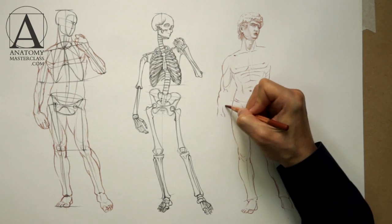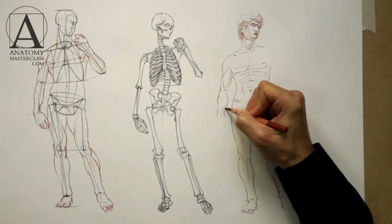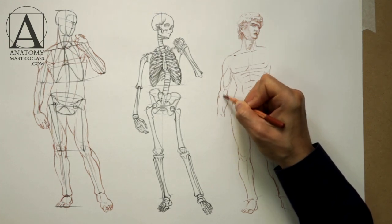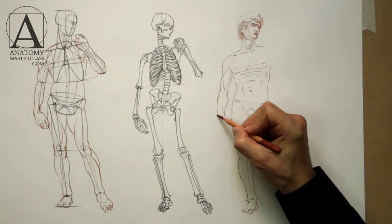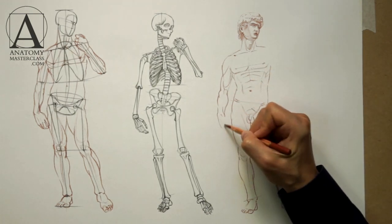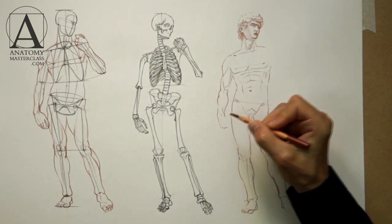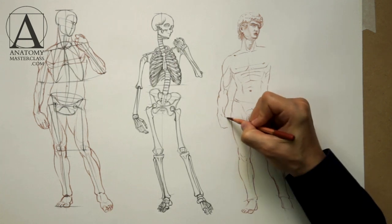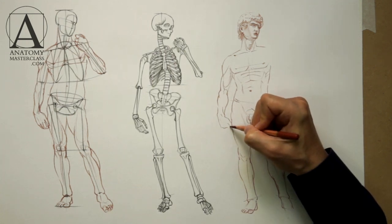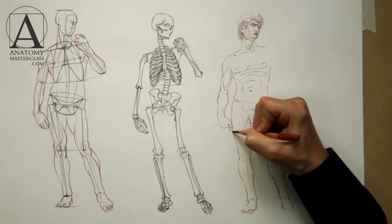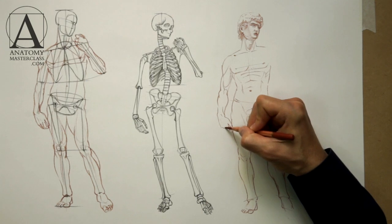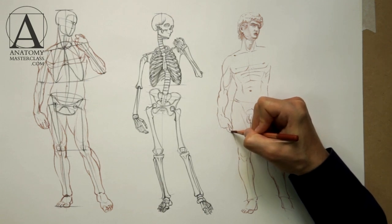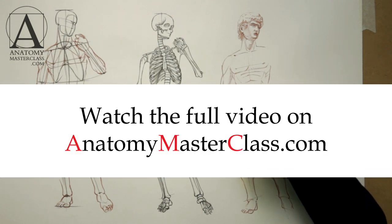The lower arm has two main groups of muscles: the flexors and the extensors. These muscles can rotate together with the radius bone, which runs alongside the elbow bone. In the pronation position, the radius crosses the elbow bone from above. In the supination position, these two bones are parallel to each other. In this drawing, you can see that David's right forearm is in the pronation position.